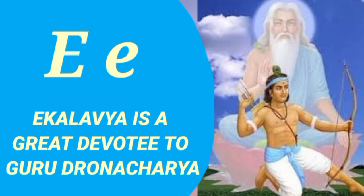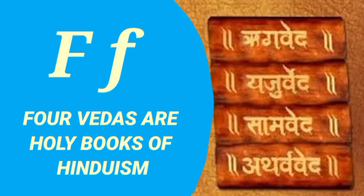E is for Eklavya, who is a great devotee of Guru Dronacharya. F is for Four Vedas, which are holy books of Hinduism.